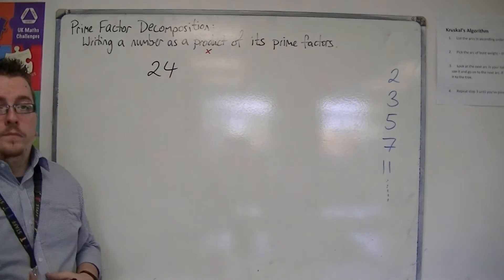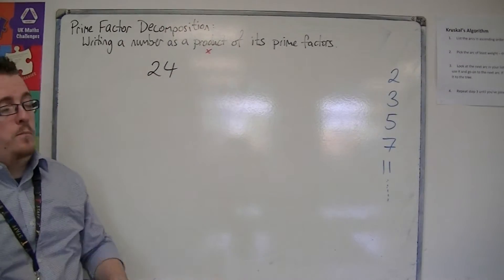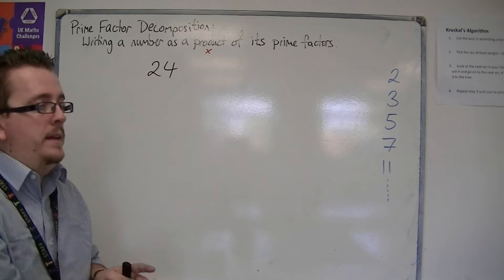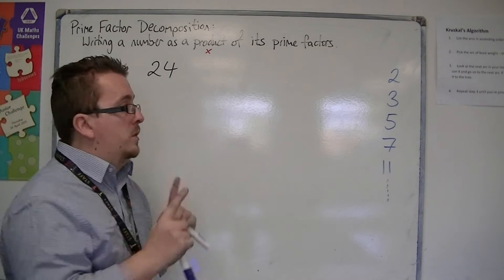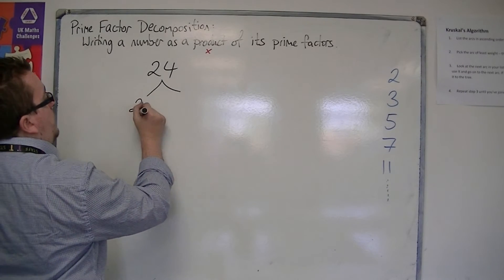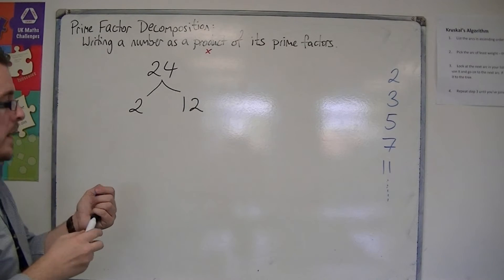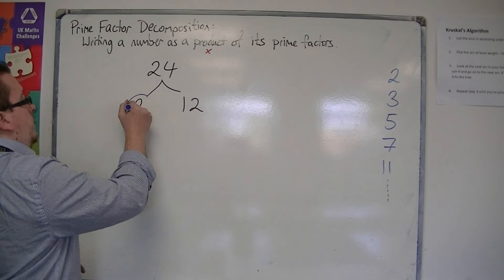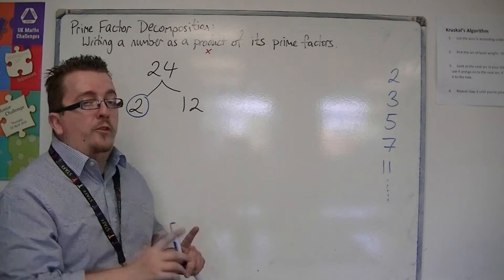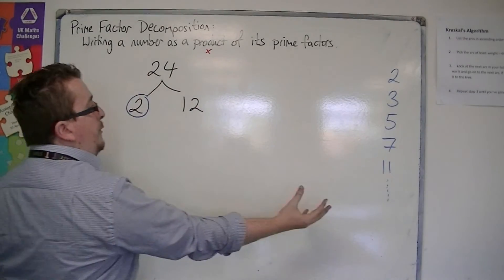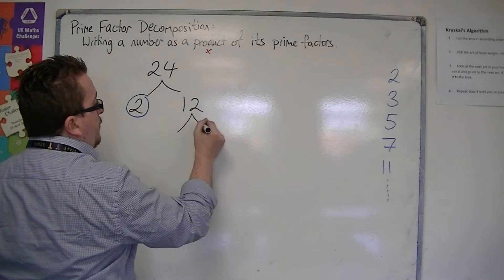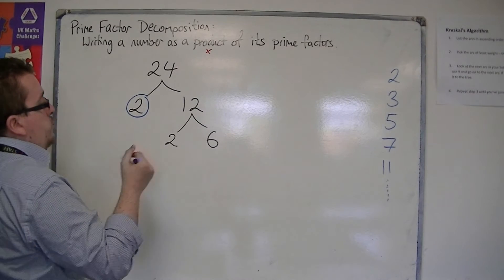Now, with 24, we want to find a prime number that goes into 24. It doesn't matter which order you pick your prime numbers. So you might think to yourself, I know that 2 goes into 24, so I use a tree where I'm writing 2 lots of 12 makes 24. Once I have this branch, I circle any prime numbers that come out of it. So 2 is prime — I circle it. I then look at 12; 12 is not prime, so now I look for a prime number that goes into 12. 12 can be written as 2 times 6. 2 is prime, so I circle it.